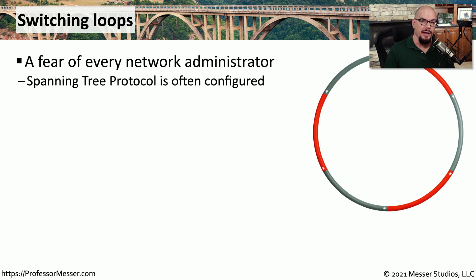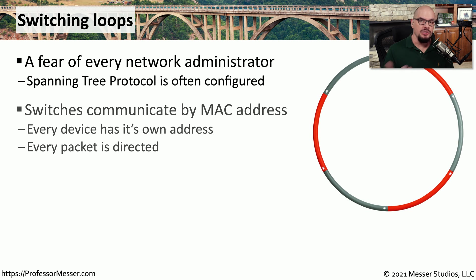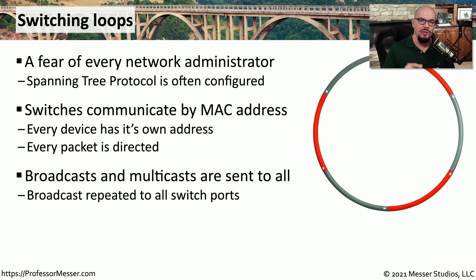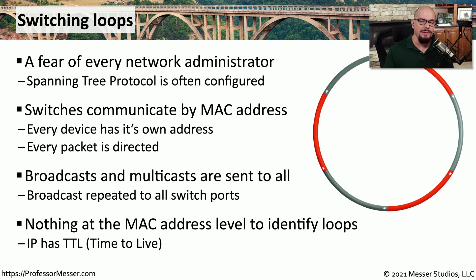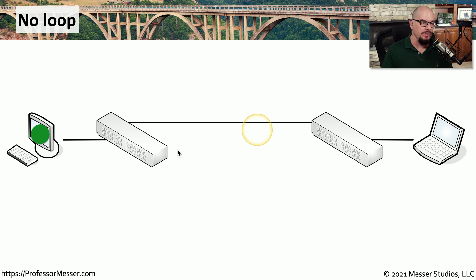If you're not running spanning tree protocol on your network, you are susceptible to a switching loop. A switching loop is when switches — forwarding traffic based on destination MAC address — create a loop that constantly sends traffic back and forth between two switches. Everything gets sent between these devices: unicast, broadcast, multicast, and anything else on the network. With IP addresses, the time-to-live would recognize a loop, but with MAC addresses there's no mechanism to recognize a loop. On a network with two switches and a single link, we don't have a loop, but if we inadvertently connect another wire between those switches, we've effectively created one.